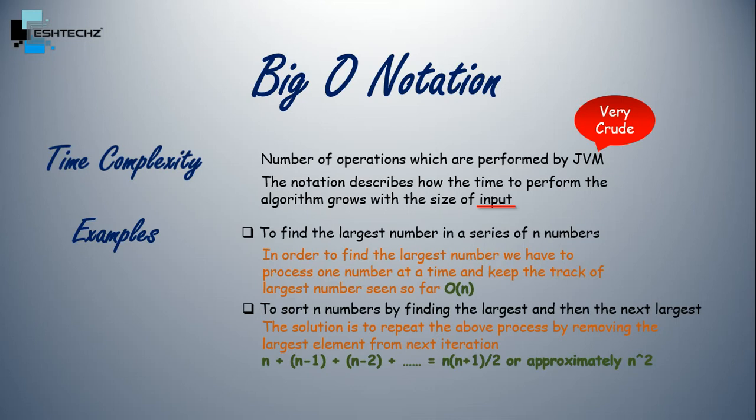So the solution is to repeat the above process by removing the largest element from the next iteration. Now here N is the size of series. And for the next iteration, we will have one less element because in our previous iteration, we would have already found the largest element. And similarly for the next iteration, we will have two less elements and so on.